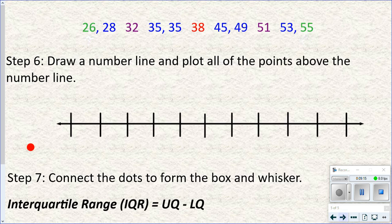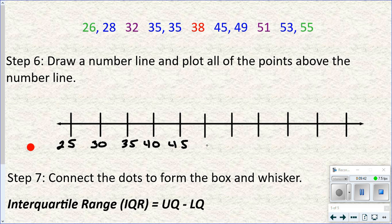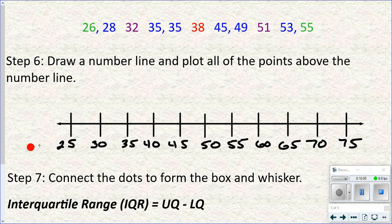Now we just have to graph those five values. To do that, draw a number line. Our data goes from 26 to 55. Unlike a dot plot, you can skip values here. I'm going to start with 25 and count by fives: 25, 30, 35, 40, 45, 50, 55. You should have at least five segments so your data isn't all squished together. Counting by tens would work, but this looks nicer and more spread out.